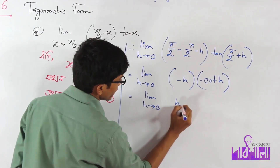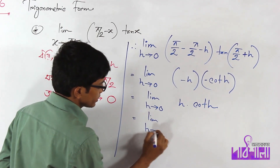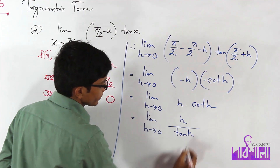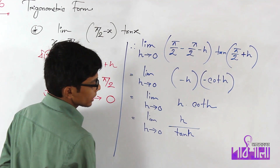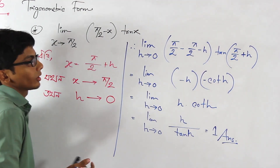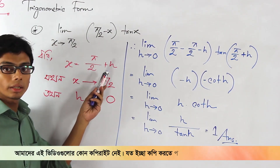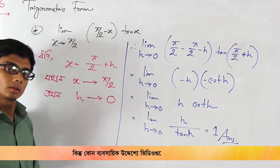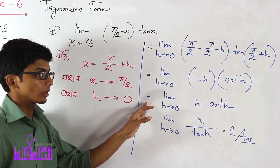If you have a limit where x tends to 0, then tan tends to 0. If the limit is 0, the limit of x tends to 1 is π/2. So the limit of x tends to 0 is π/2. Now your limit of x tends to π/2 gives π/2, and the limit of the trigonometry format is π/2.